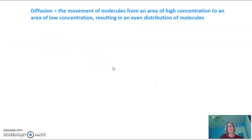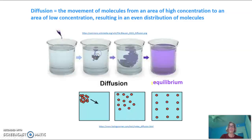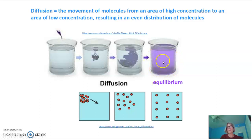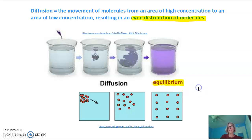Diffusion is the movement of molecules from an area of high concentration to an area of low concentration, resulting in an even distribution of molecules, and that's pictured here. If we drop some purple dye into this water, initially it starts out in a very high concentration where it was dropped, and it slowly starts to spread out until there's an even concentration throughout the entire beaker. From a molecule point of view, the purple dye molecules start all close together and slowly spread out until we have an even distribution. This even distribution is called an equilibrium.